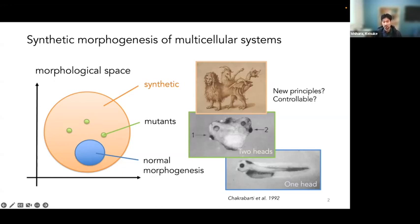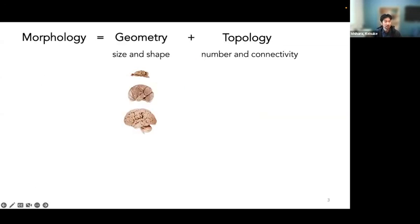Is self-organization even controllable? I think this really pushes the possibilities of multicellular systems. Before we start talking about this grand idea, one question that really struck me was: what exactly is morphology? When I started thinking about this, it led to the idea that if we turn to mathematics, there's a very nice way of defining morphology as two complementary concepts — geometry and topology. Geometry is a familiar topic for biologists: it's really the study of size and shape.